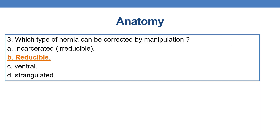Which type of hernia can be corrected by manipulation? In the majority of cases, reducible hernias can be corrected by manipulation — option B is the correct answer. Incarcerated means irreducible, so that cannot be corrected by manipulation. Only reducible hernias can be corrected by manipulation.